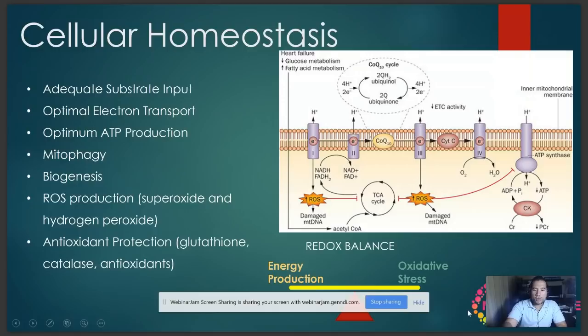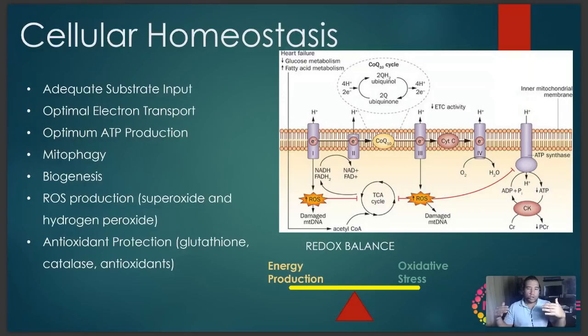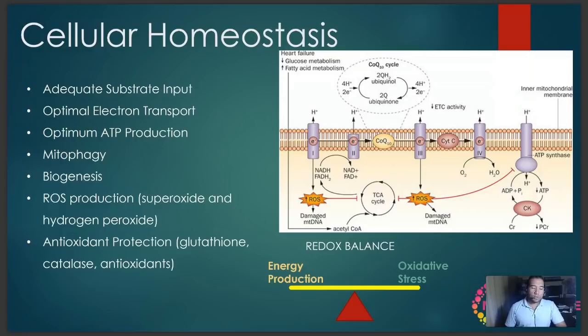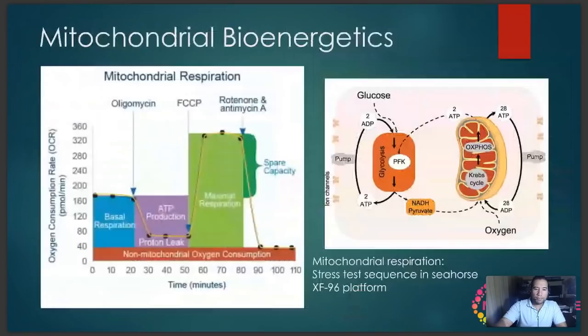All of this leads to something called redox balance — the balance between energy production and oxidative stress. If the balance tips towards oxidative stress, the overall picture of cellular respiration is negative, because every time a glucose molecule comes in and cells convert it to energy, it's producing more oxidative stress than energy. Over time, that creates significant disease risk. This imbalance can come from both insufficient mitochondrial energy production and from low levels of antioxidant systems like glutathione, superoxide dismutase, and catalase.